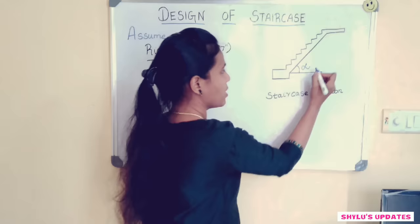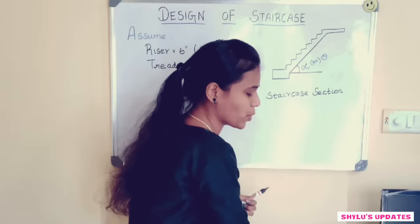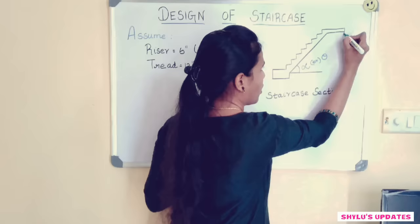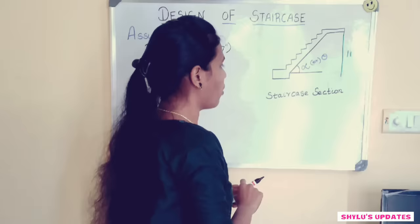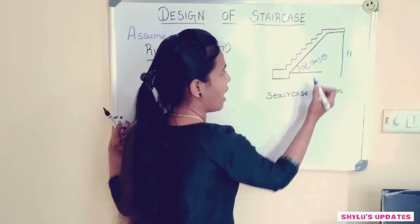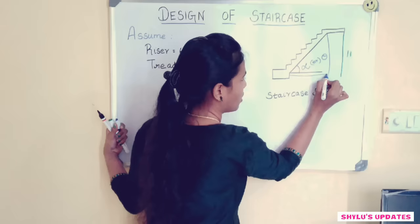Now we are going to assume the building height. From top to bottom, I am going to assume the building height as 11 feet. Also, we have to find the horizontal distance — the horizontal distance is from here to here — which we can calculate as well.